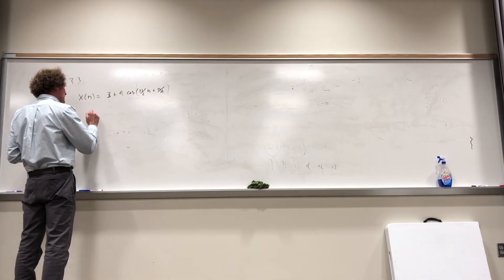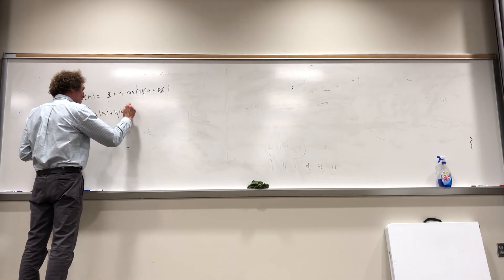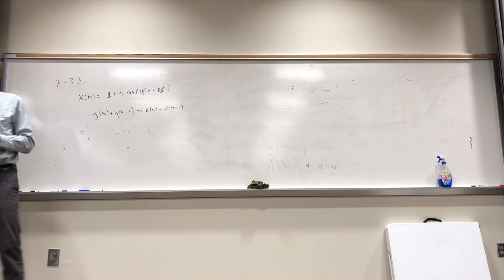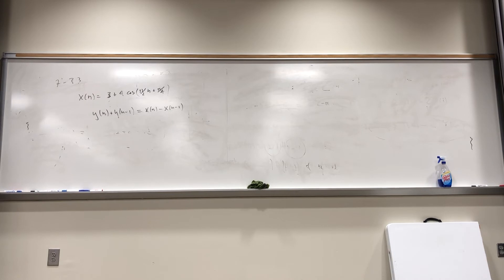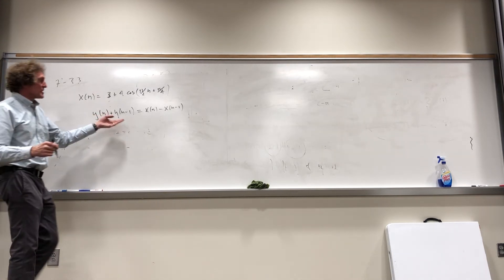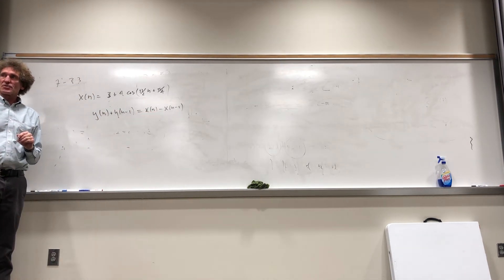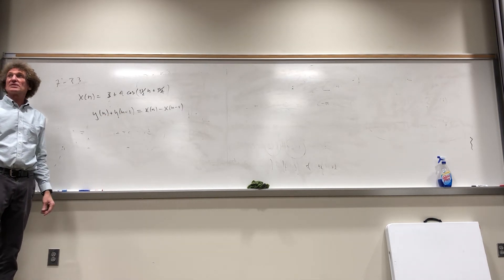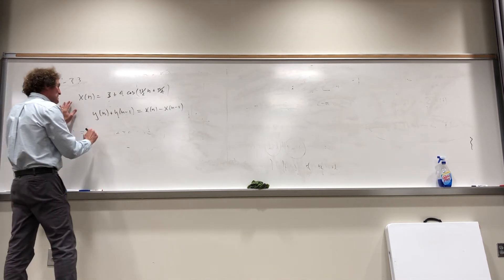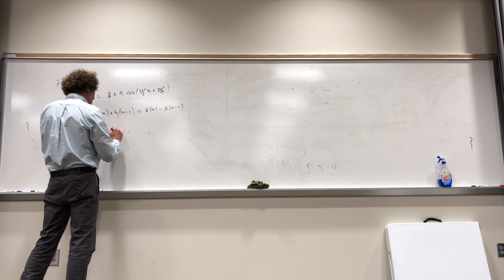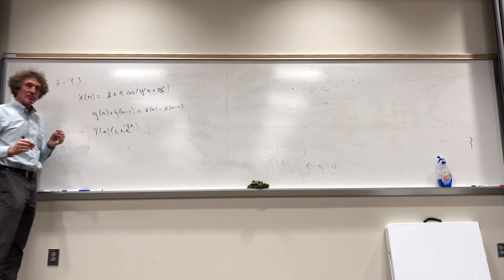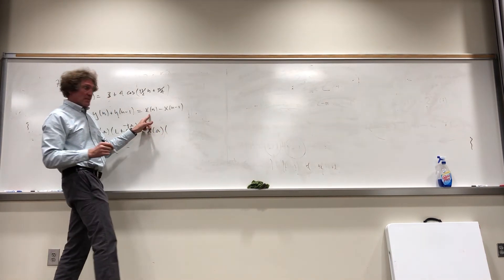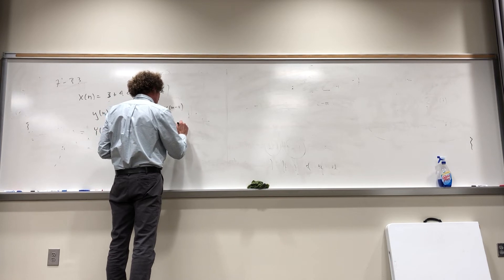The difference equation is: y[n] + y[n-1] = x[n] + x[n-1] — actually, it may be minus x[n]. This is a common type of difference equation with terms on both sides. Now what we need is the transfer function. Taking the DTFT of both sides: Y(ω)·(1 + e^{-jω}) = X(ω)·(1 + e^{-jω}). Wait — let me factor this correctly.